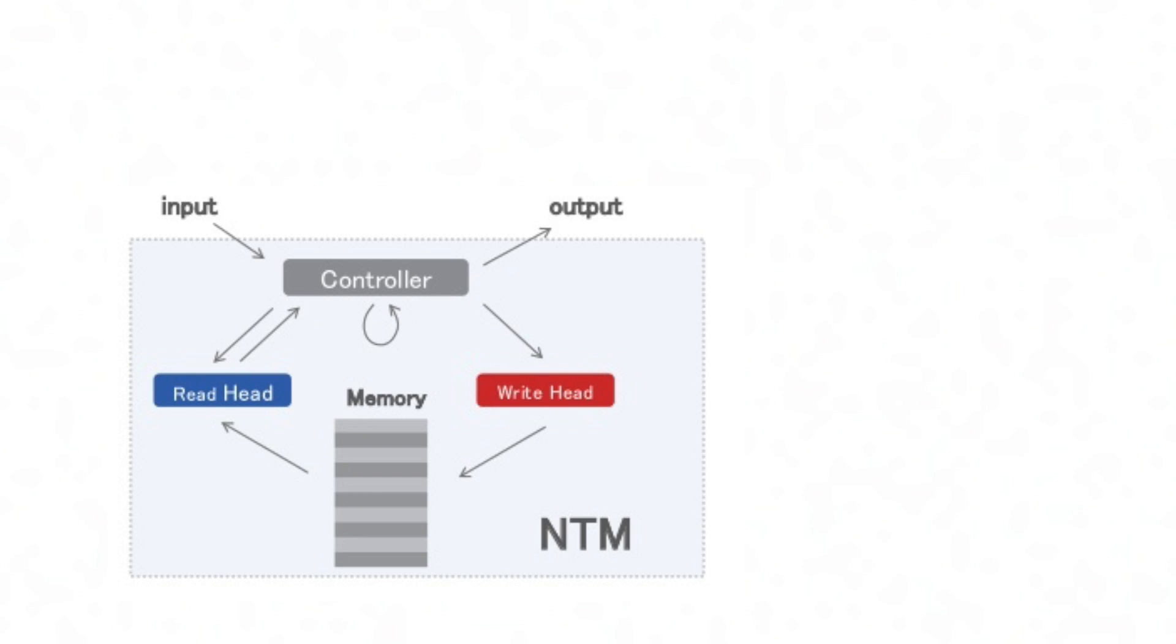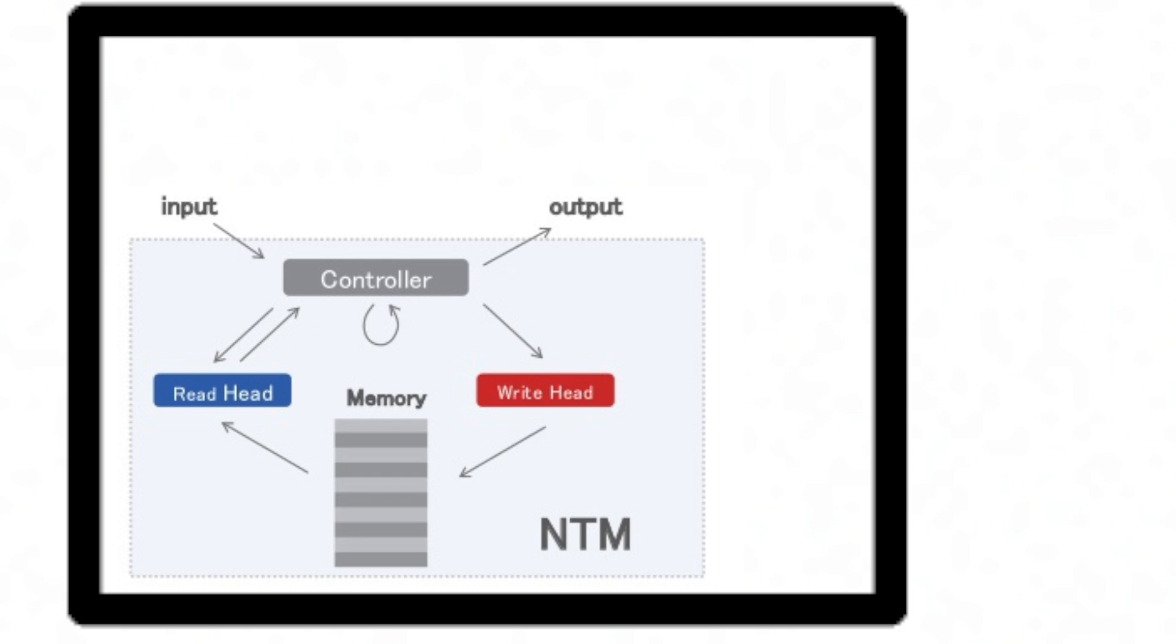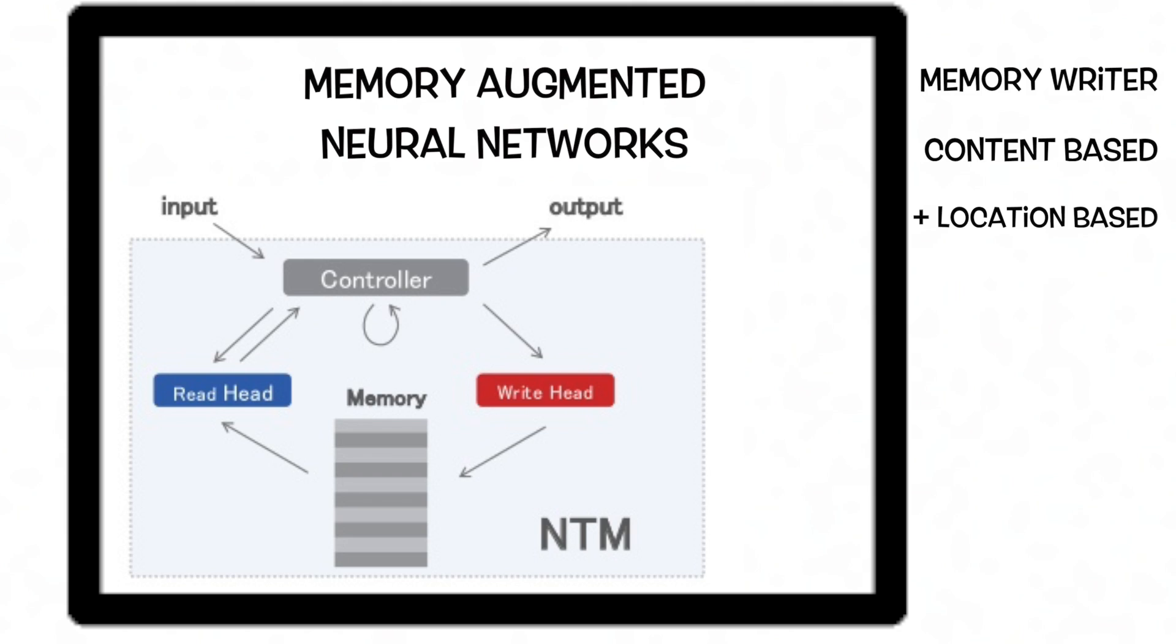So the authors of our one-shot learning paper knew that NTMs were a subset of memory augmented neural networks. And they saw the potential to improve on it, so that they could learn from just a little data. They discovered that using a pure content-based memory writer, instead of content plus location, let them do just this.